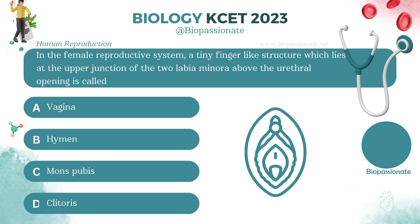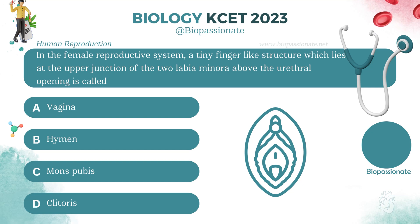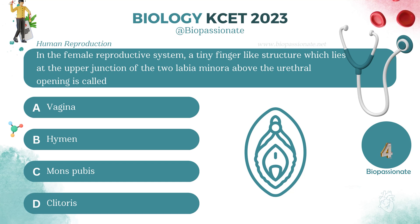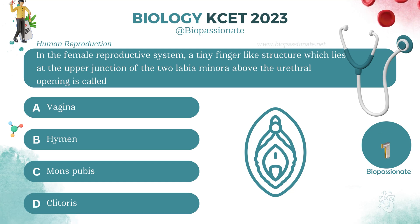In the female reproductive system, a tiny finger-like structure which lies at the upper junction of two labia minora above the ureter opening is called what? Answer: Clitoris.